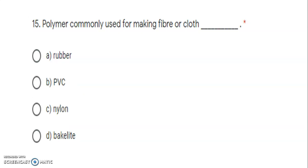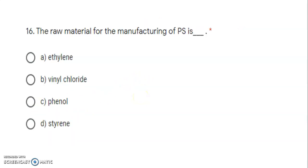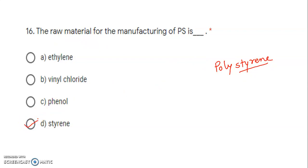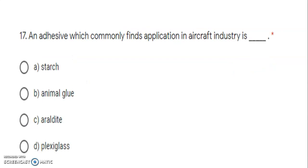Next: polymer commonly used for making fiber or cloth. Options include rubber, PVC, nylon, and bakelite. The polymer used for making fiber or cloth is nylon. Next: the raw material for manufacturing PS — PS stands for polystyrene. The name itself indicates the raw material: styrene is used as raw material for manufacturing polystyrene.